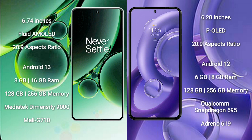OnePlus Nord 3 runs on the Android 13 operating system. It comes with 8GB or 16GB RAM and 128GB or 256GB internal storage, powered by a MediaTek Dimensity 9000 processor with Mali-G710 GPU.